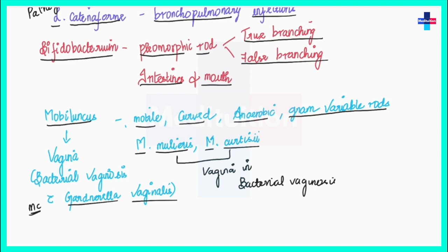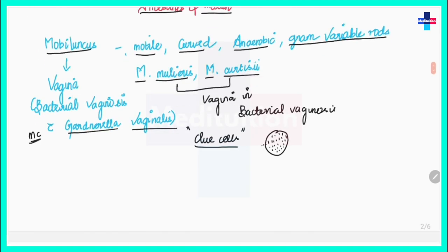Bacterial vaginosis occurs when the pH of the vagina changes — normally the vaginal pH should stay acidic, but if it becomes alkaline, there are more chances of developing bacterial vaginosis. In bacterial vaginosis we can see cells called clue cells, which are epithelial cells whose surface is covered by many bacilli adhered to them.